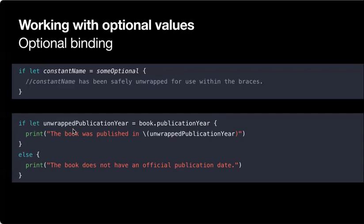In the else branch, if the optional is nil, that statement will be false and we print: 'The book does not have an official publication date yet.' So the else handles the nil case.